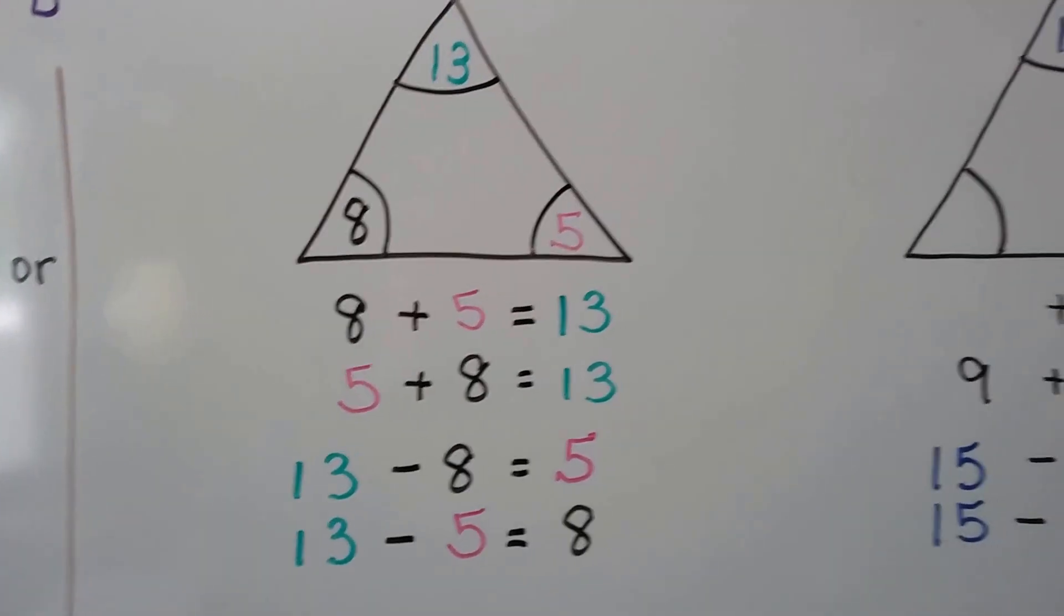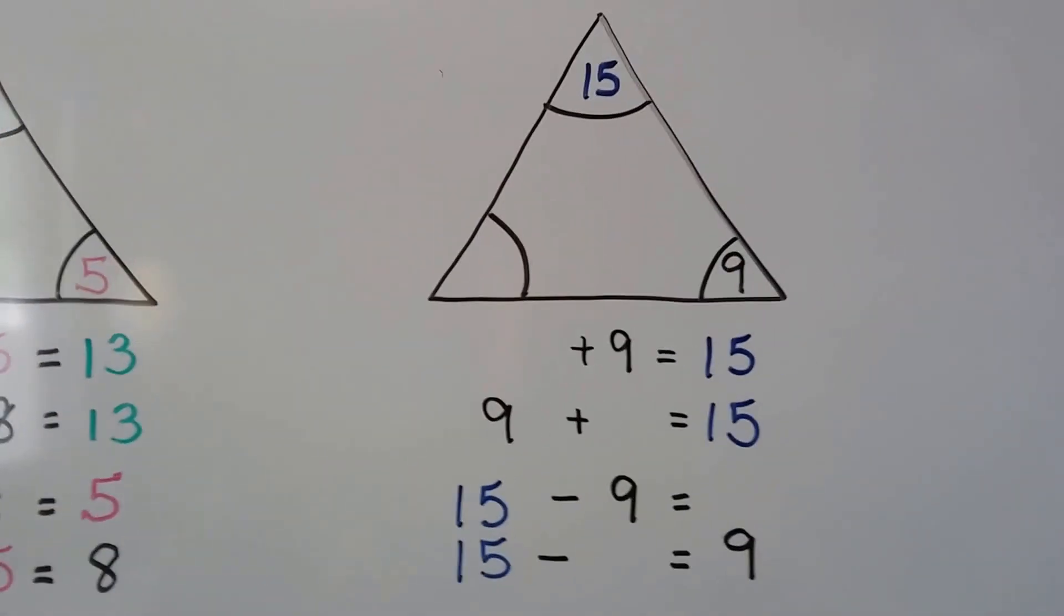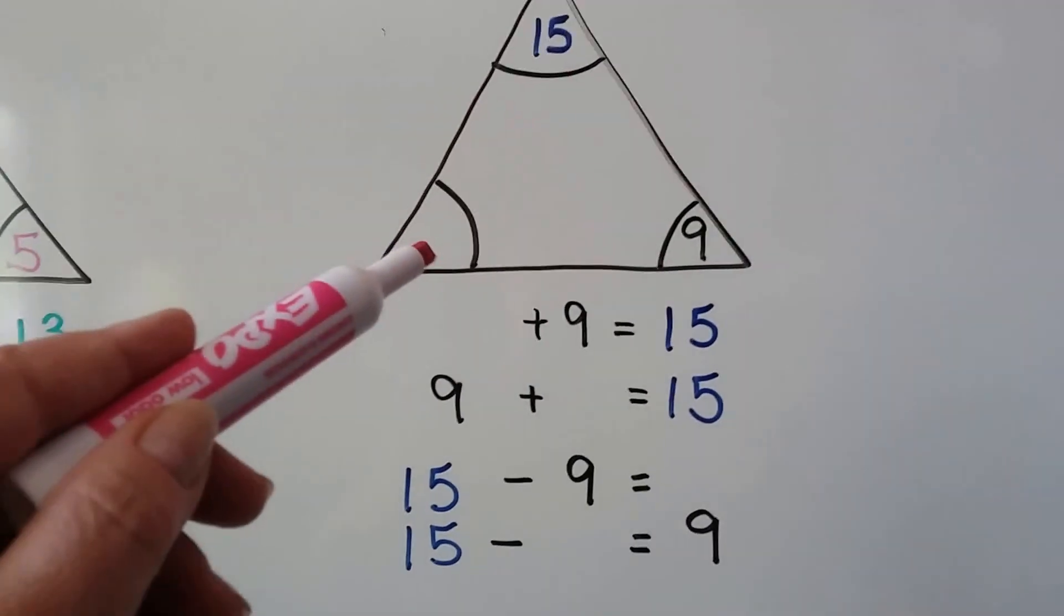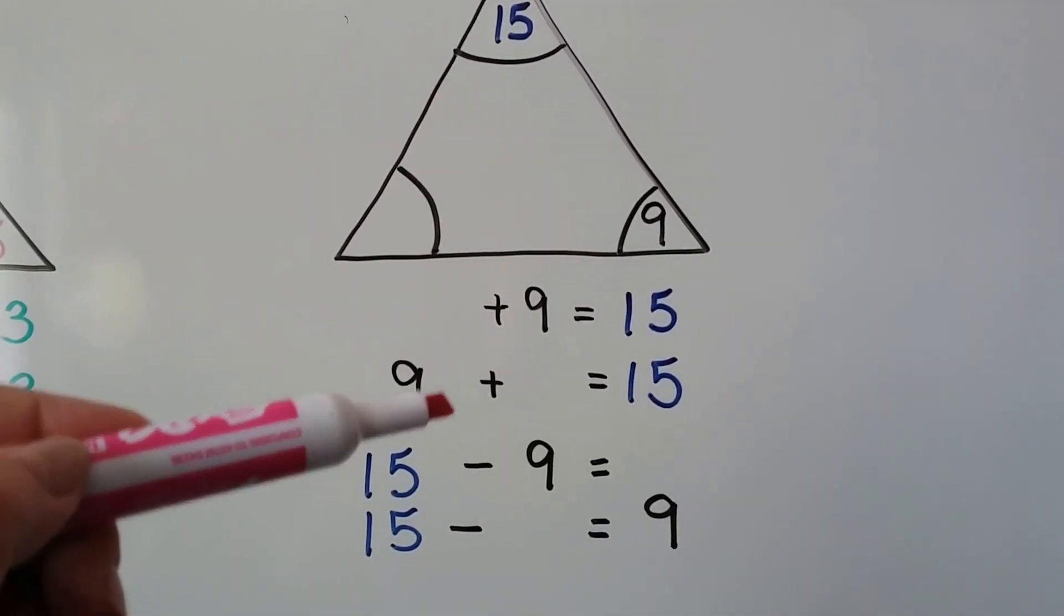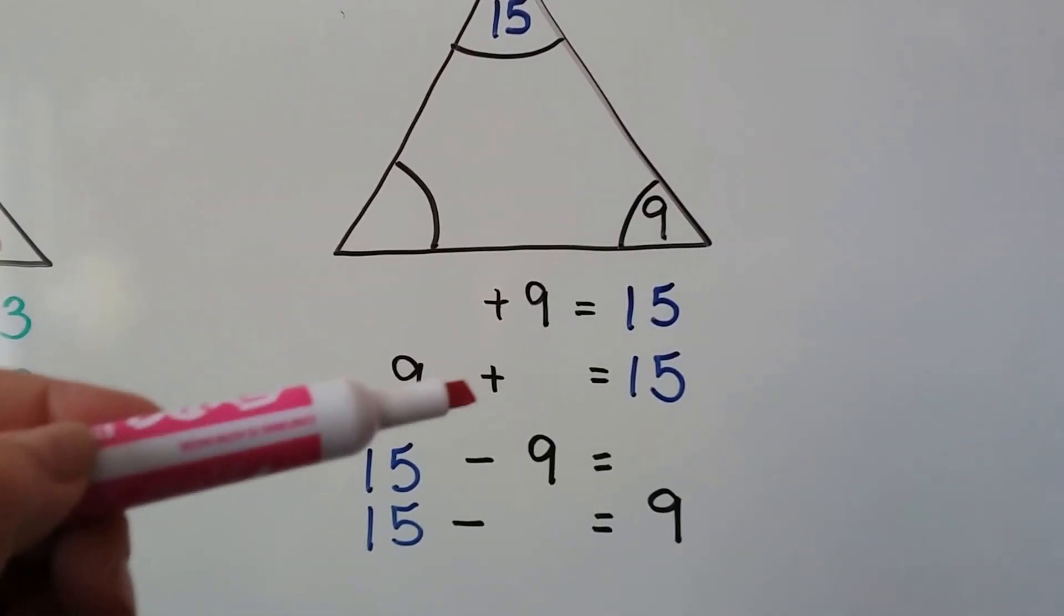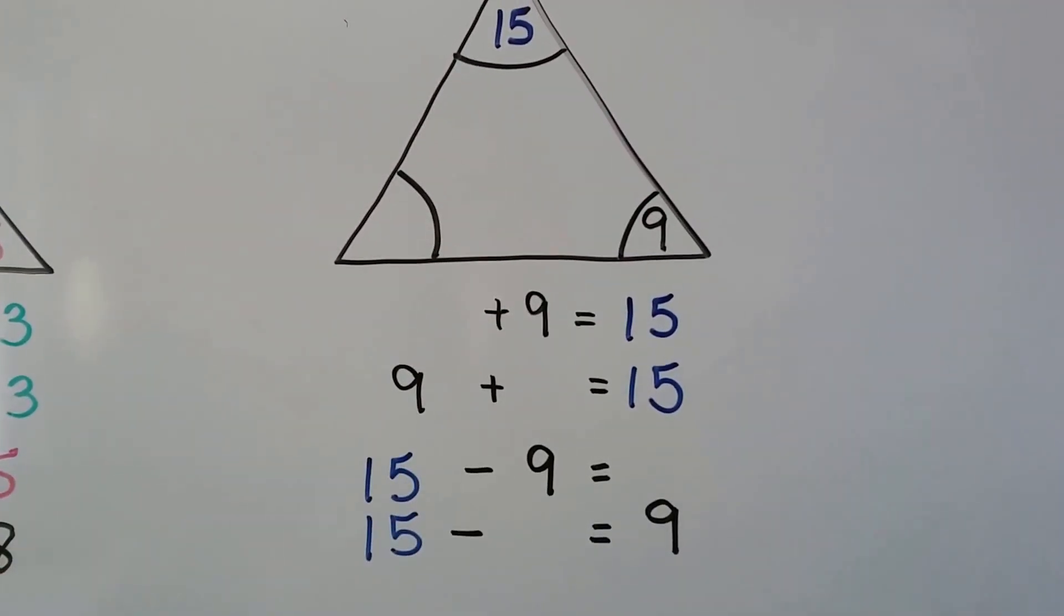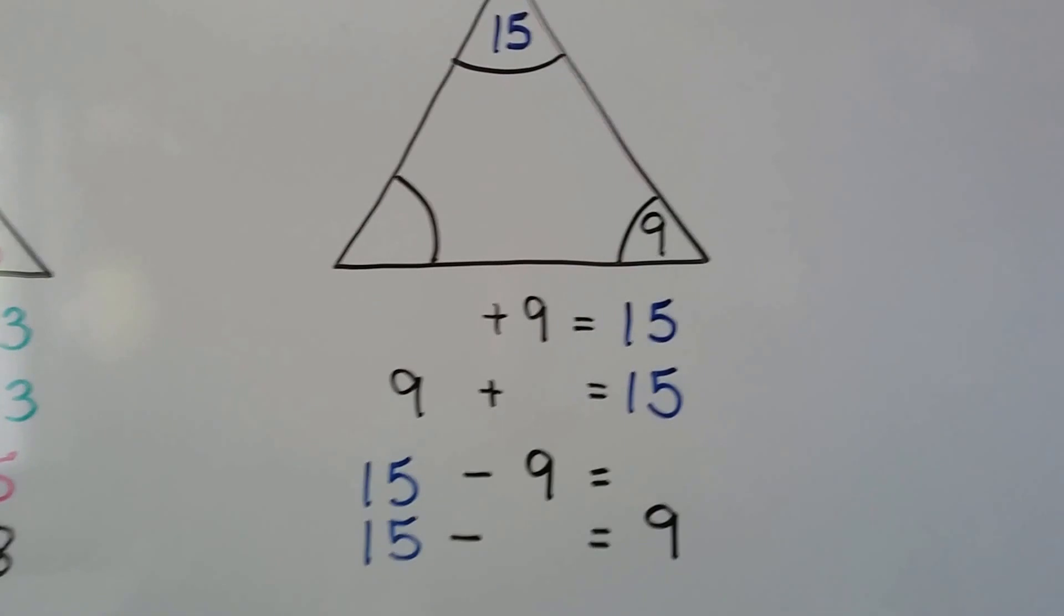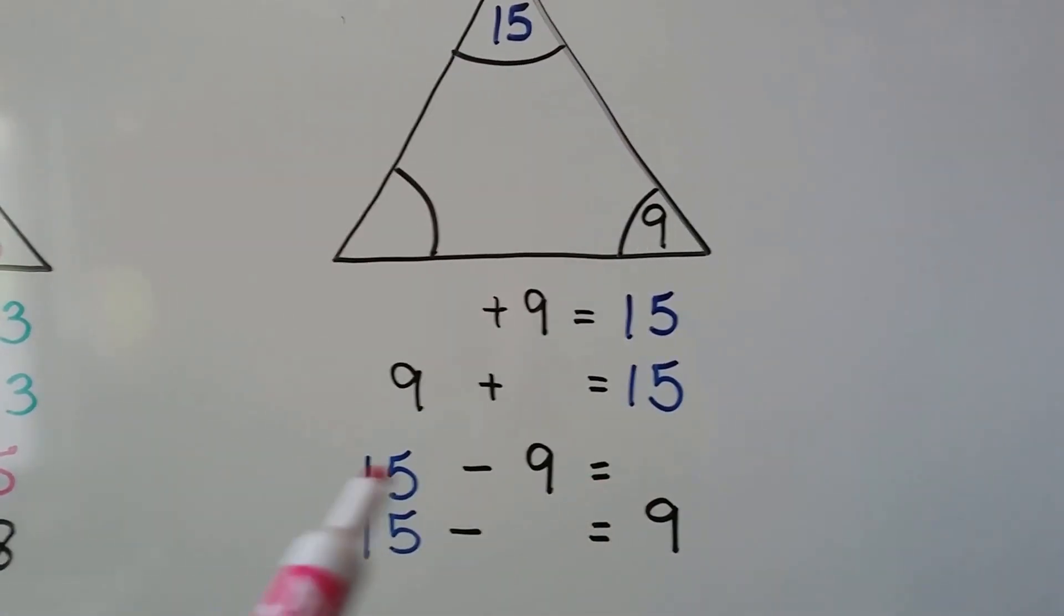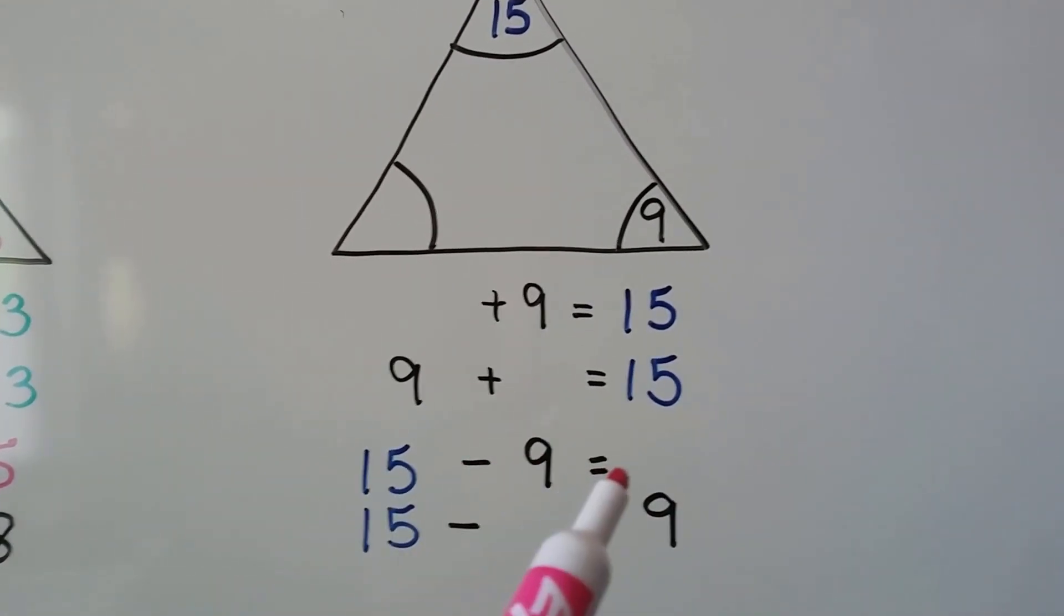Let's try another one. We have a fifteen and a missing fact and a nine. We know there's going to be two addition number sentences and two subtraction number sentences. When we look at this one, we can just answer this one. Fifteen minus nine.